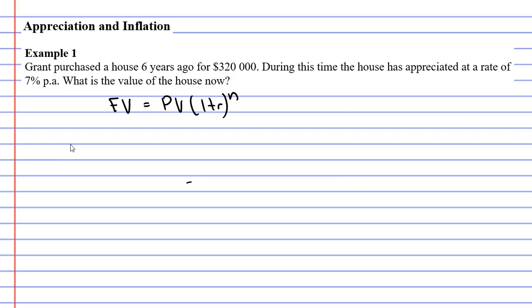Now R is the interest rate, which is 7%. We need to divide that by 100, giving us 0.07. N is the number of years, so it's been six years. And PV represents the present value, which is the original value of the house. So in this particular case, it's $320,000.